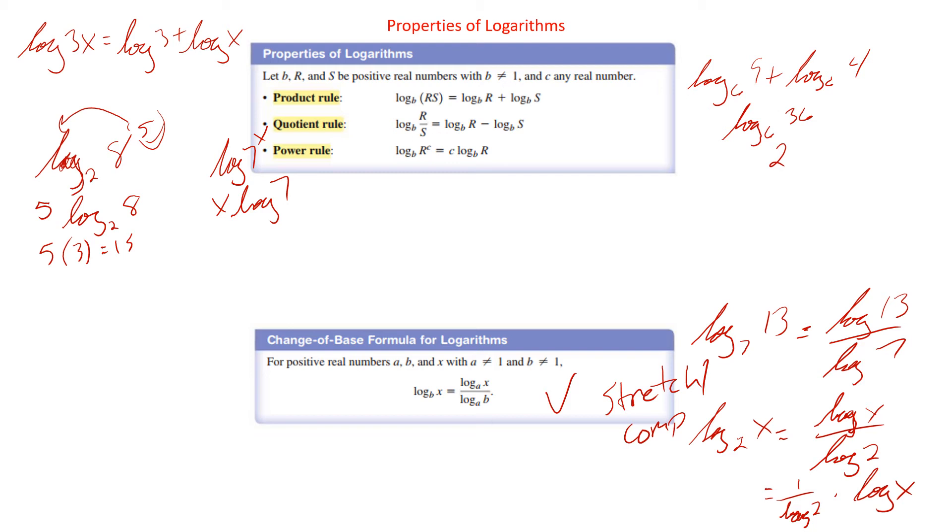Just like when we added something up here, log 3x, we could split that up log 3 plus log x. So when we multiply something inside of the log, that ends up being a vertical translation, which could also be a horizontal translation. Think of it inside the log, they end up being the same. Not the same amount, but the same thing. No. Horizontal stretcher compression. Yeah.